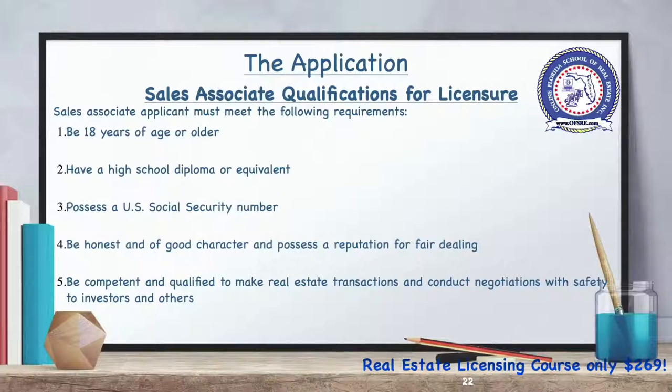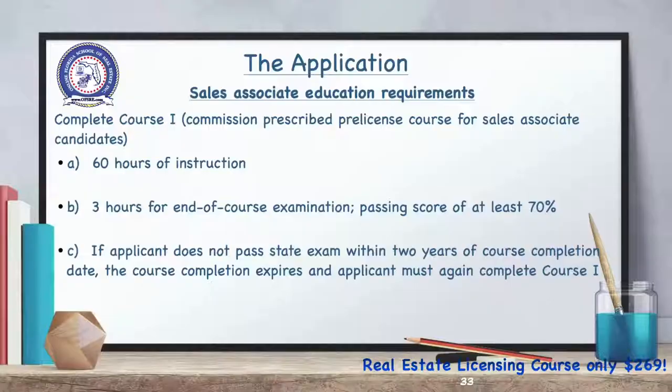In Florida, a sales associate applicant must be 18 years of age, have a high school diploma or its equivalent, possess a social security number, be honest, truthful, trustworthy, and of good character, have a reputation for fair dealing, and be competent and qualified to make real estate transactions and conduct negotiations with safety to investors and others. Sales associate candidates must comply with Course 1, which includes passing the end-of-course exam.